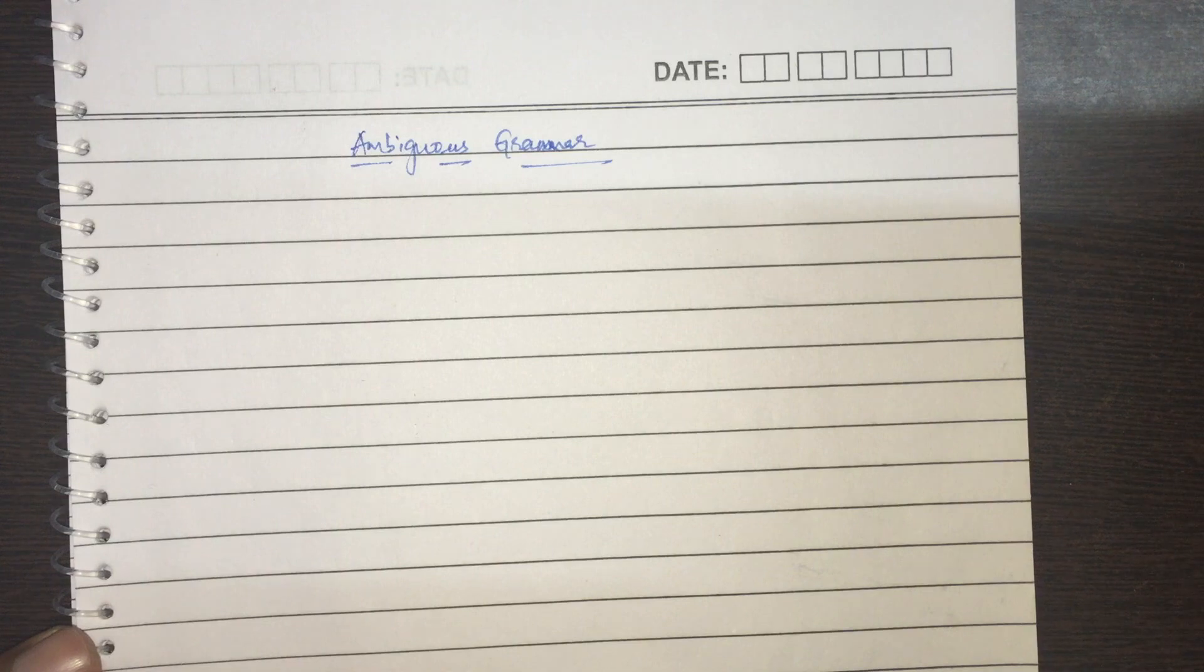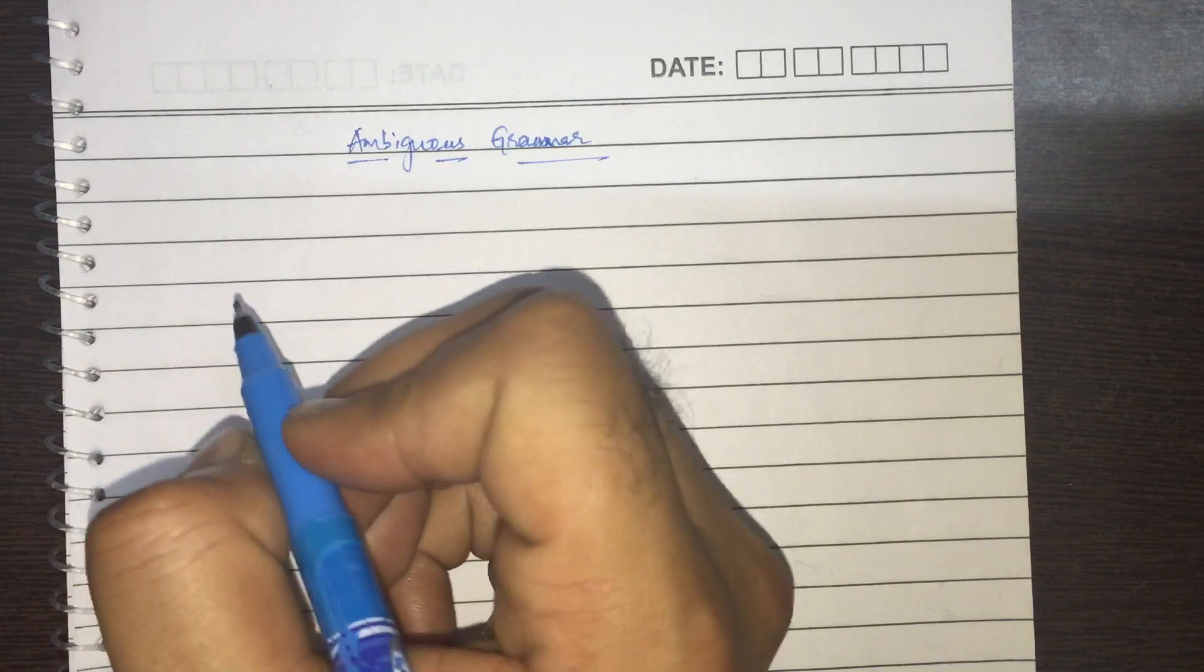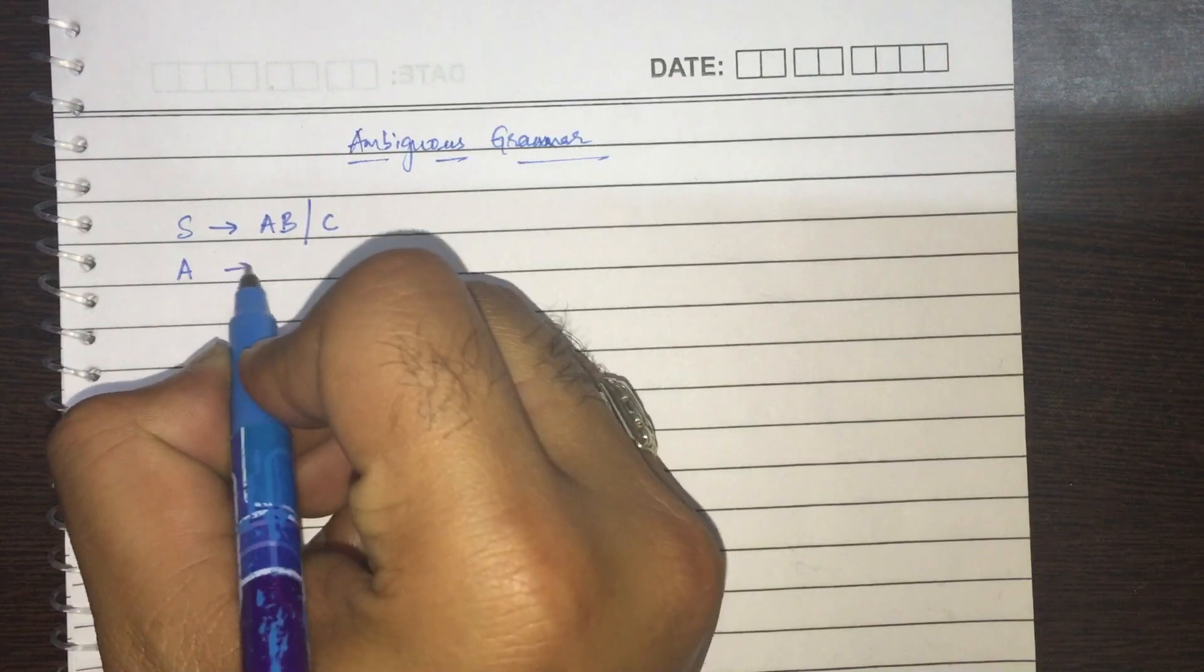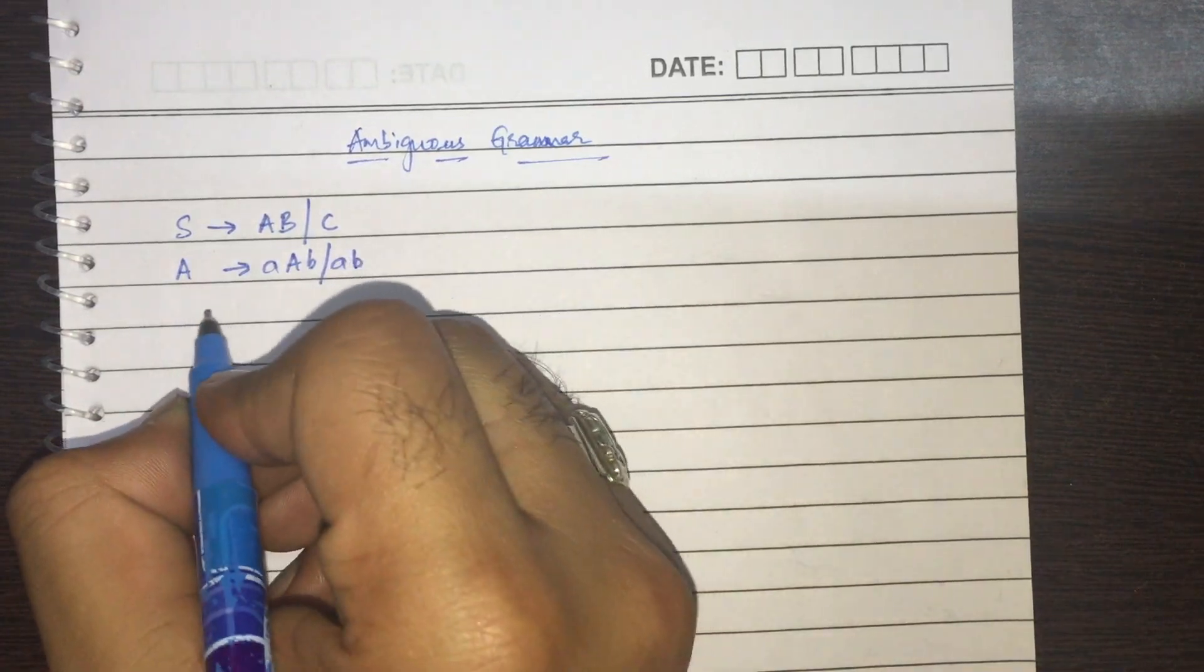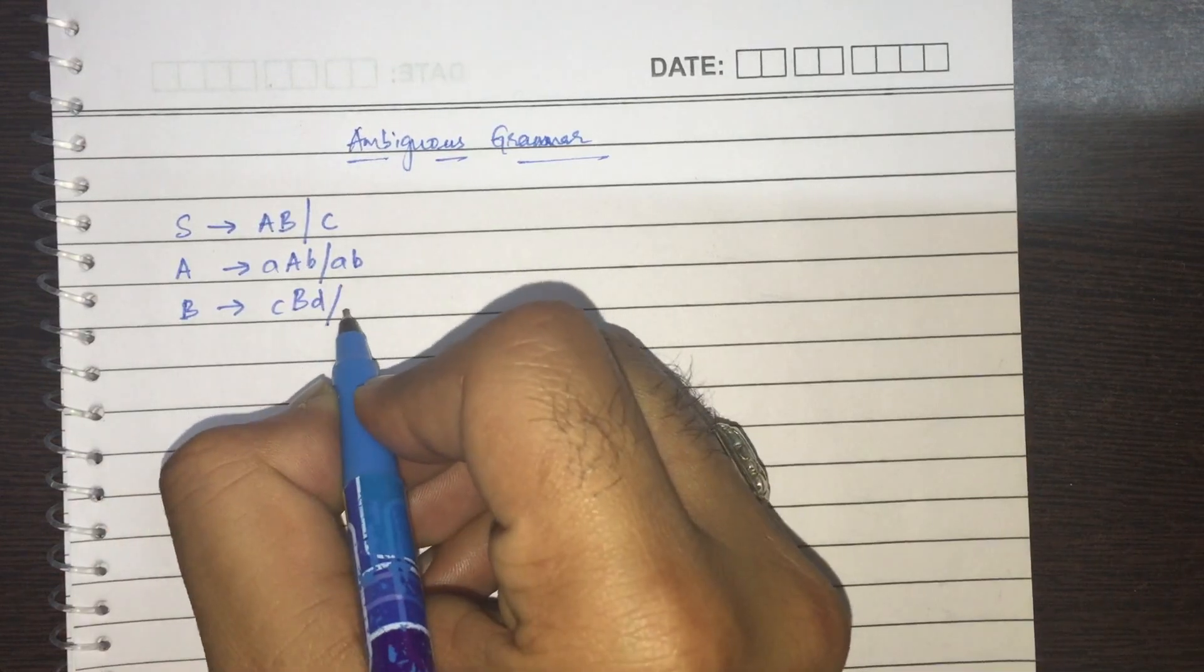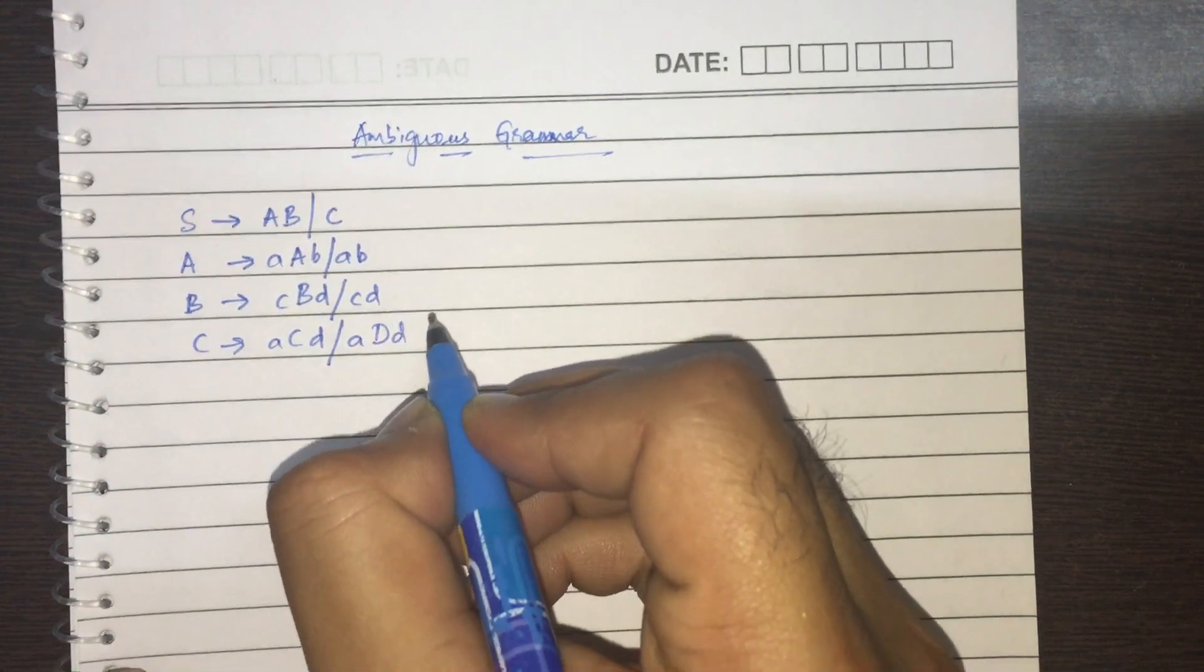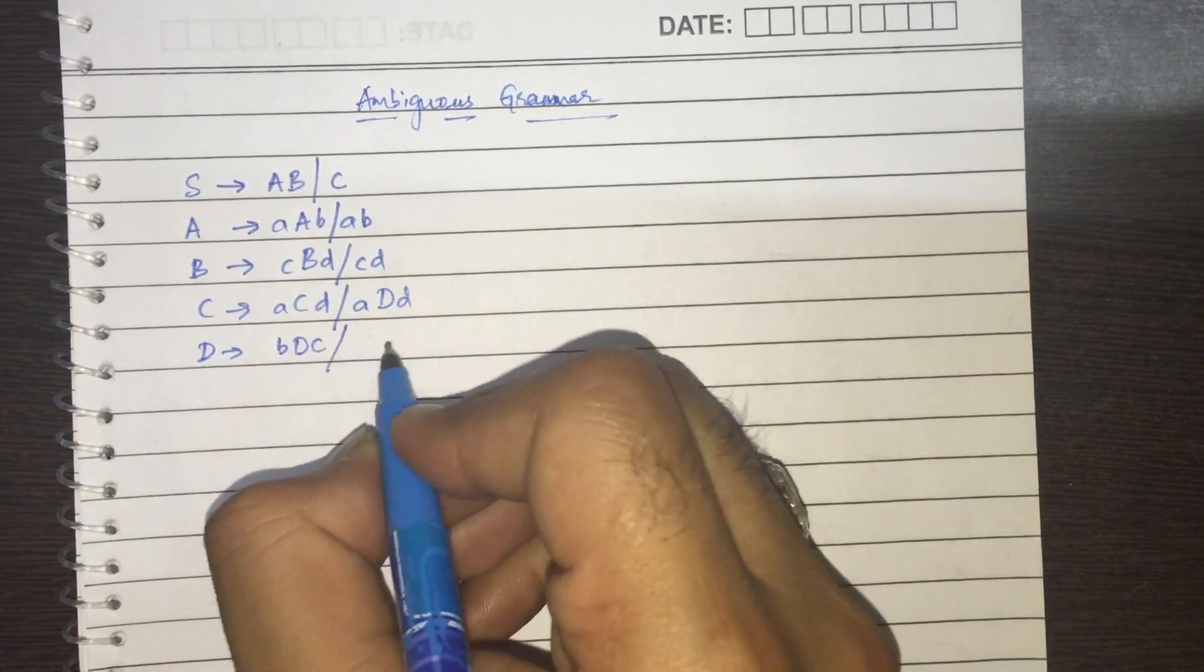So let me show it to you with an example. Let me consider this grammar. S gives A, B, C. A gives A, A, B or A, B. B gives C, B, D or C, D. And C gives A, C, D, A, D, D. And D gives B, D, C or B, C.